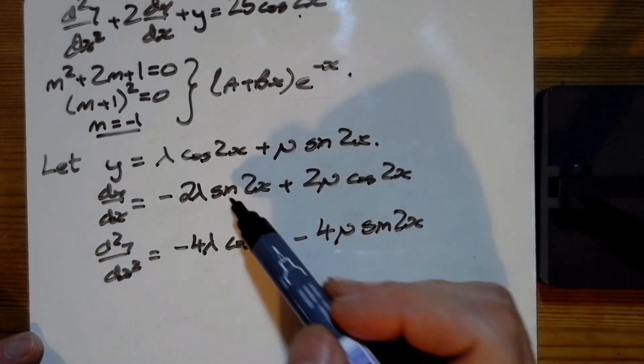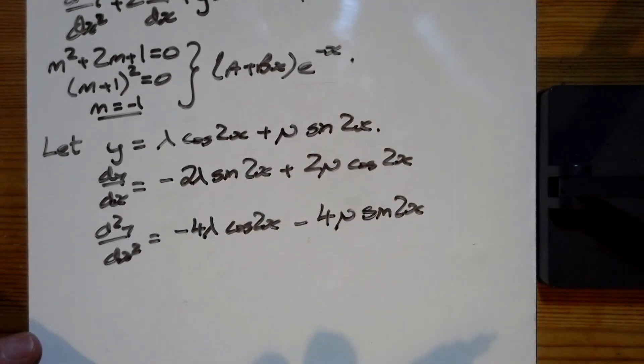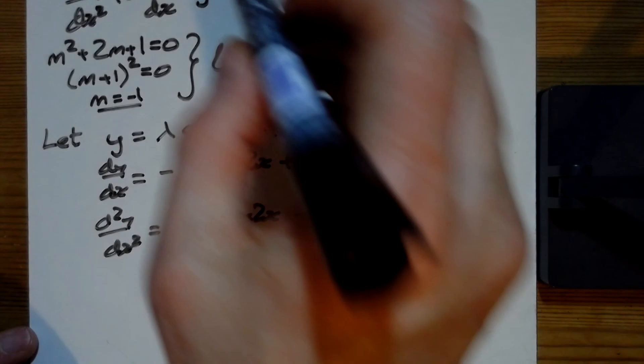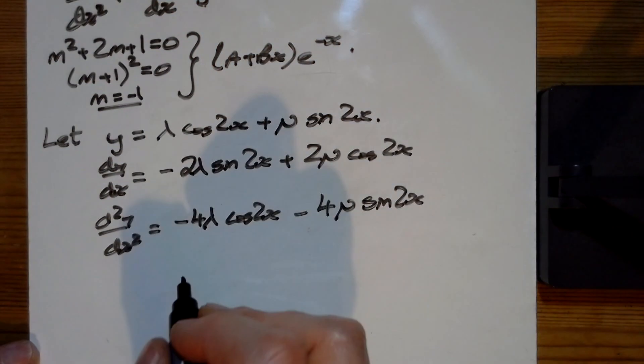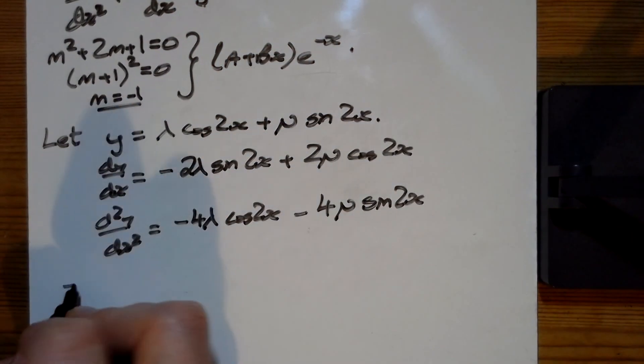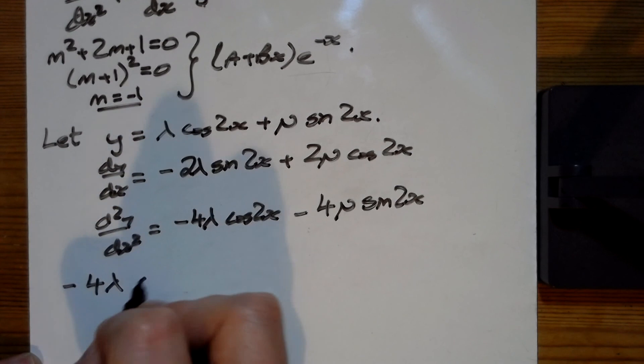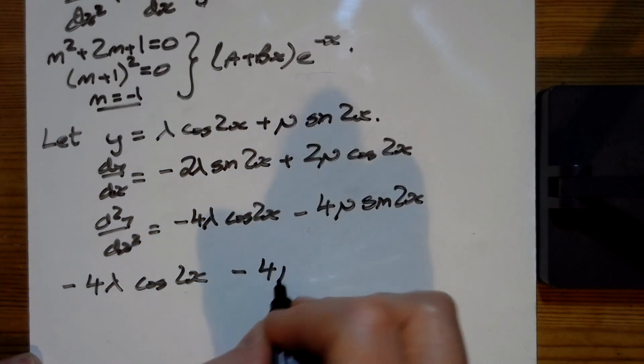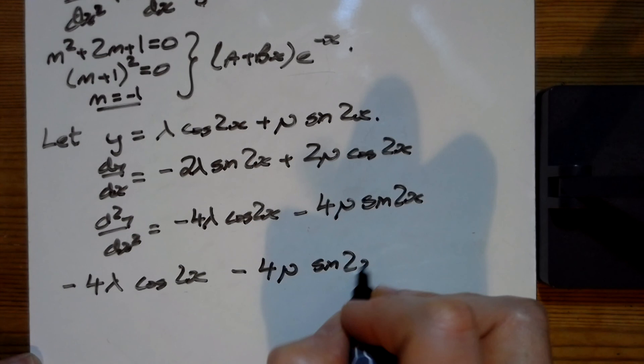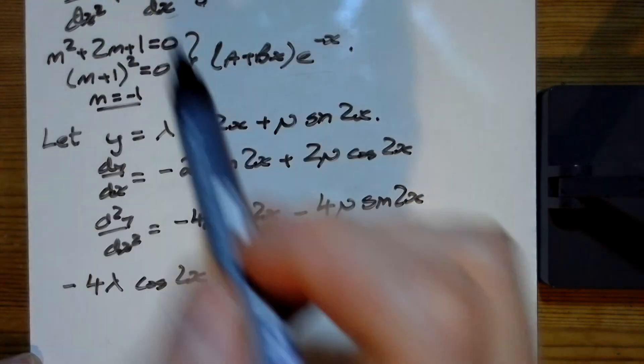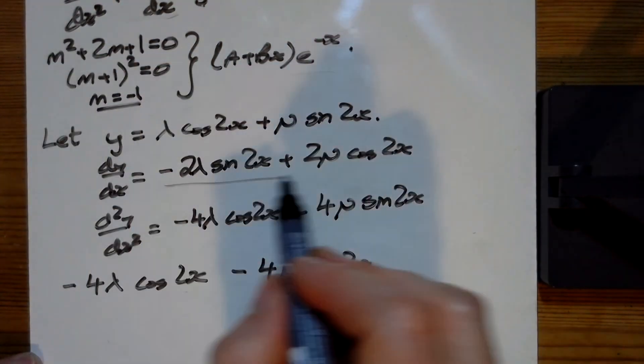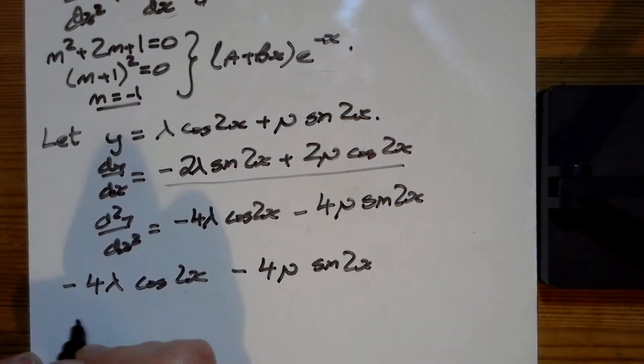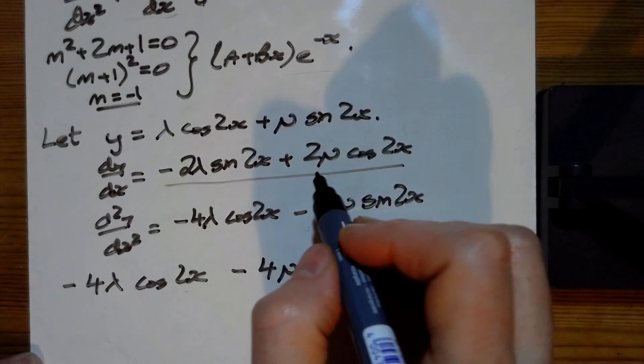Putting this into here: the d²y/dx² is -4λcos(2x) - 4μsin(2x), so there's that bit there. Now I need 2 dy/dx's, so that's two of these. So that is... actually I was going to put them around the other way.